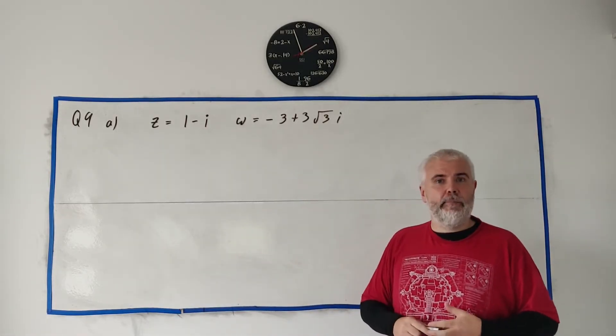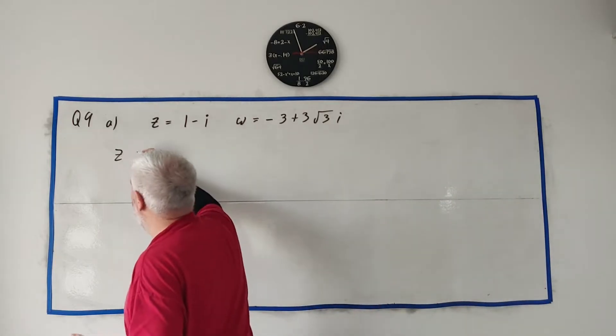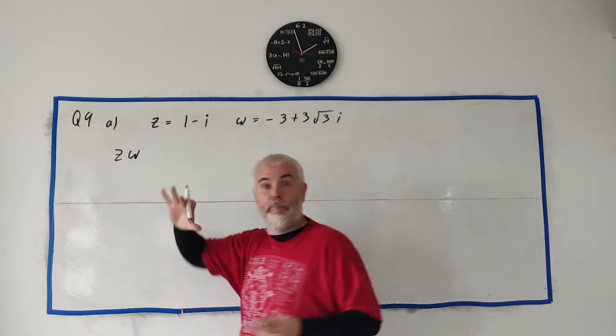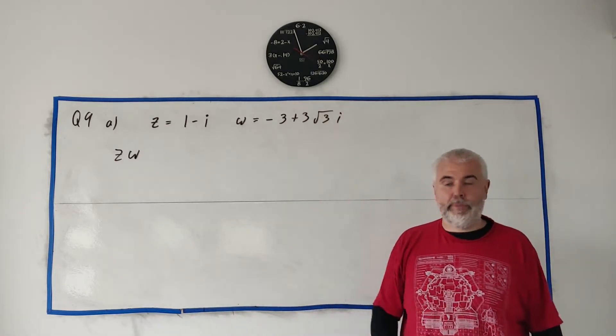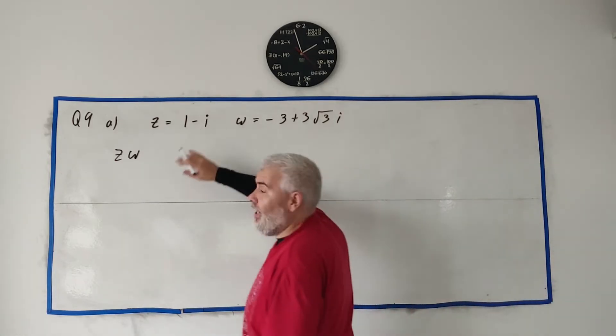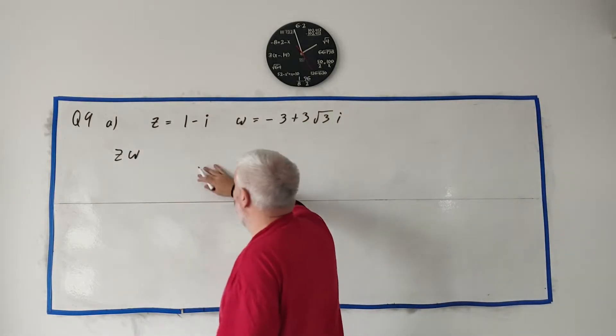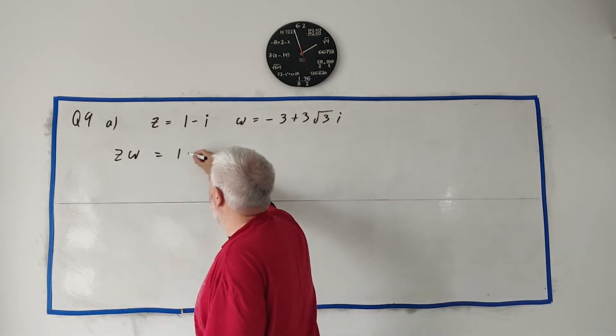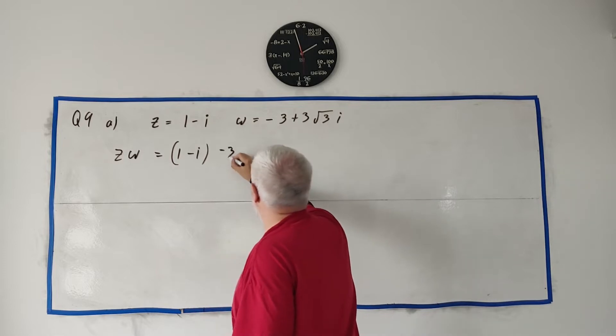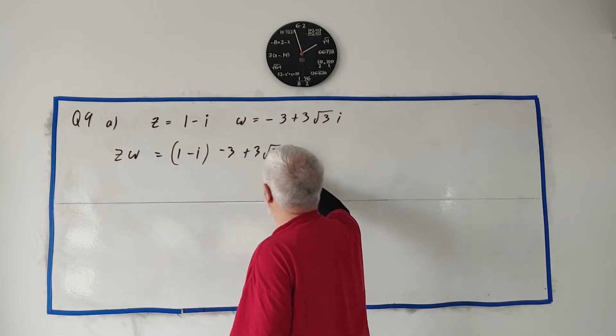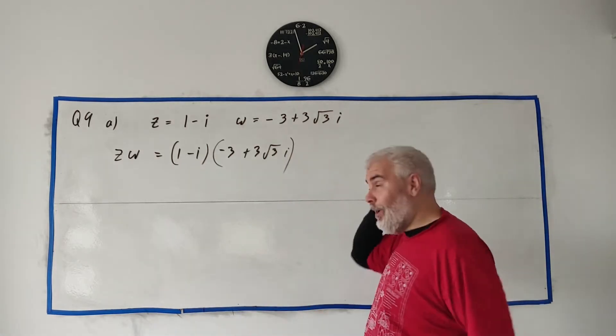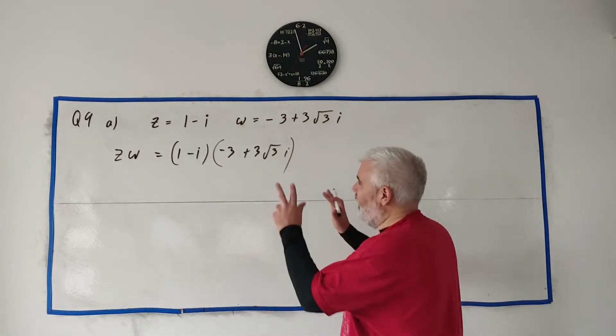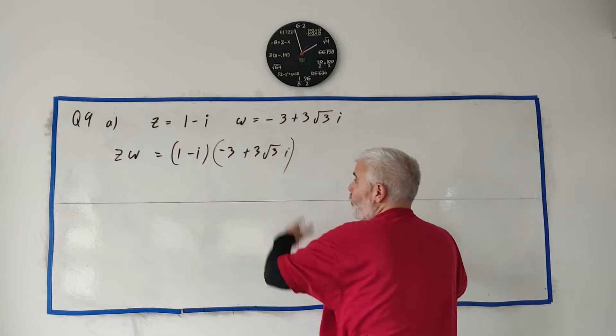Question 9 is a complex numbers question where they give us two complex numbers, Z and W, or at least that's what I usually say. I've been recently reminded that this is Zeta and Omega, so I'll try and say that for the rest of this one. Part C and D of this question, I don't like at all. I don't think they phrased it well.